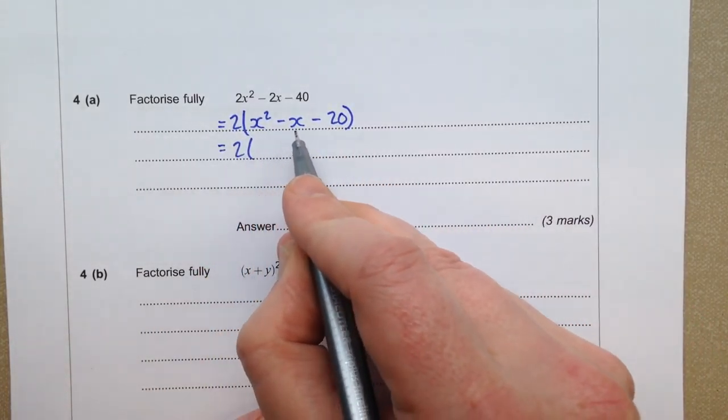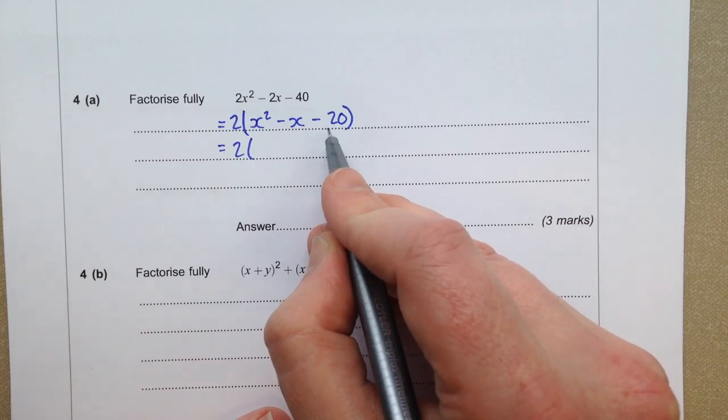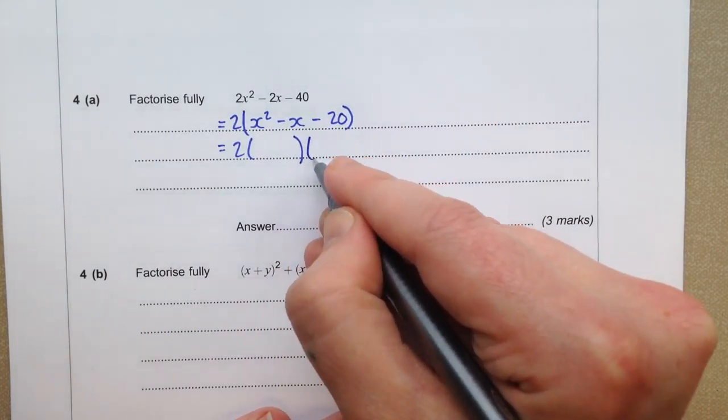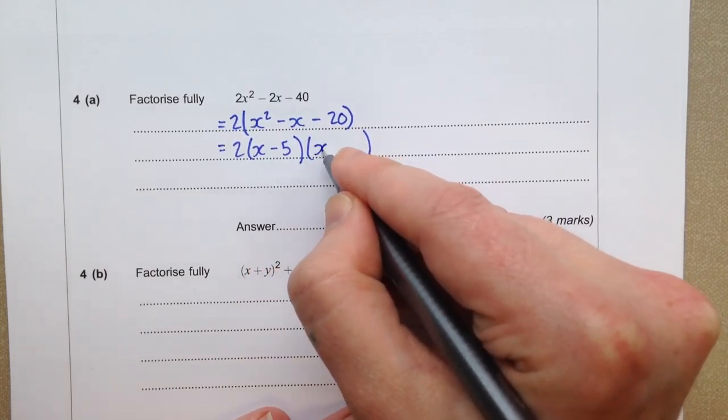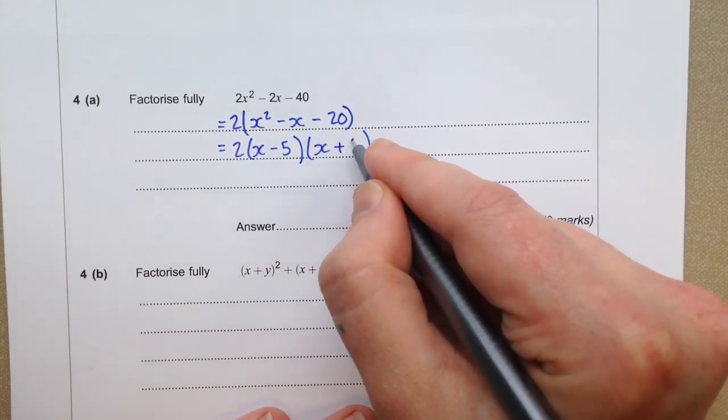Now, I'm thinking of the two numbers that add together to make negative 1 and times together to make negative 20. And I'm thinking 5 and 4. So it's going to be negative 5 and positive 4.